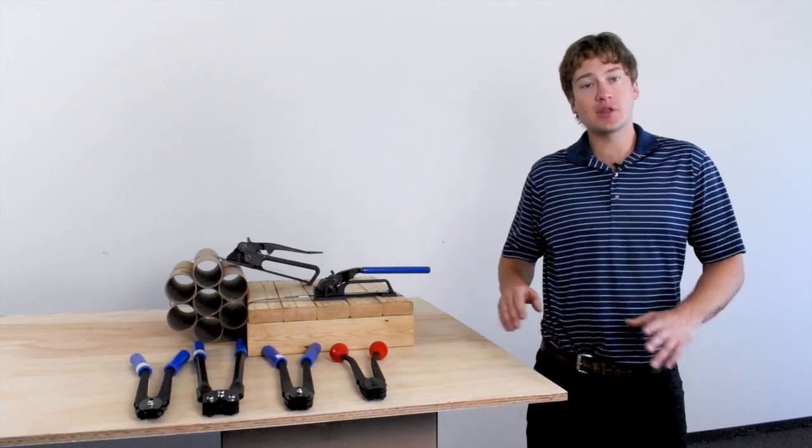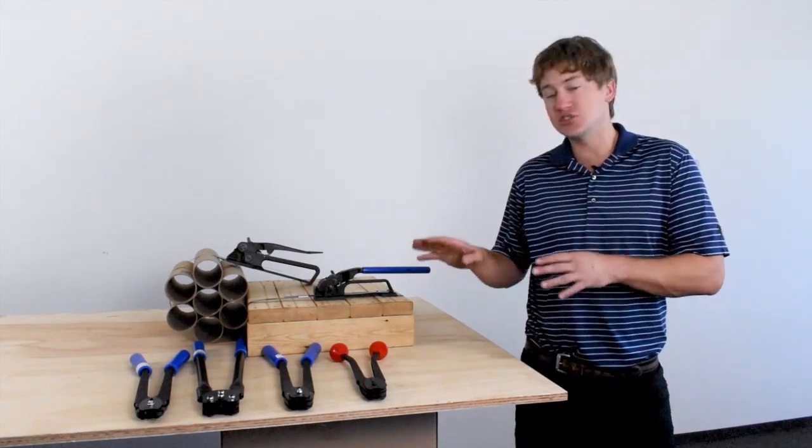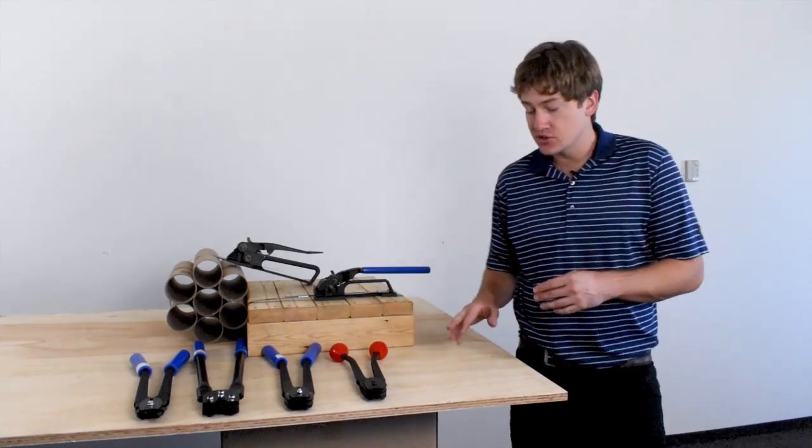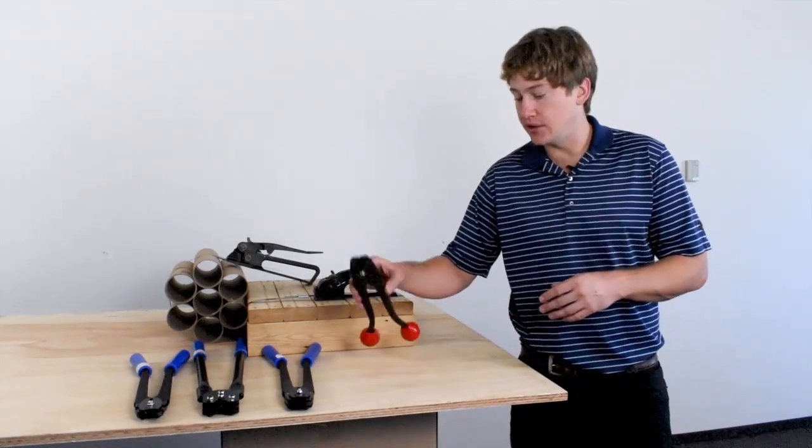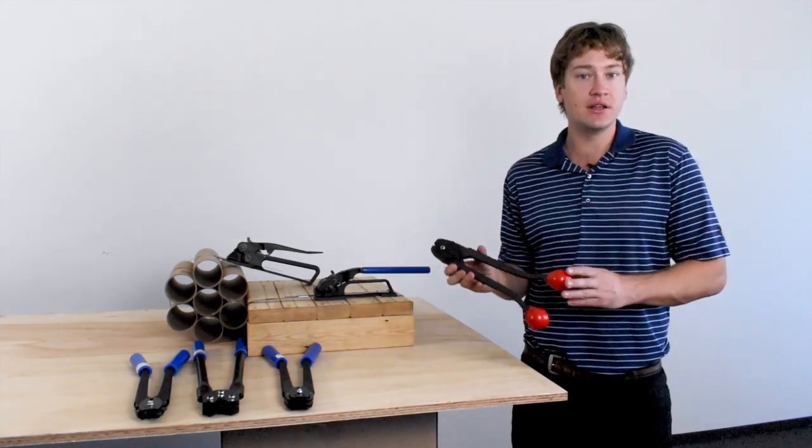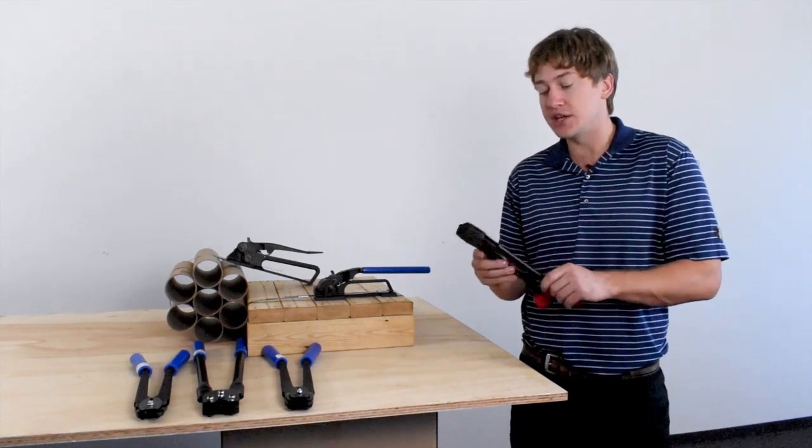Today we are taking a look at the family of Encore front action sealers for steel strap. So the first tool we're going to look at here is the EP1810. This is an import double notch steel sealer.